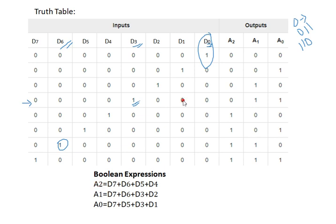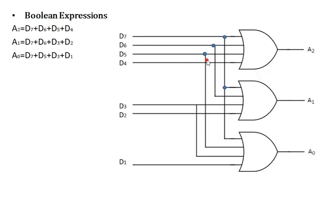The Boolean expressions for the 8-to-3 encoder: A2 = D4 + D5 + D6 + D7. Similarly we derive expressions for A1 and A0. The logic circuit uses OR gates — for A2, inputs D4, D5, D6, D7 are all fed into an OR gate giving output D4 + D5 + D6 + D7. A1 and A0 are handled similarly. This is the complete logic circuit for the 8-to-3 encoder.